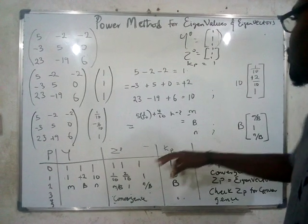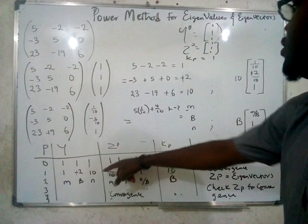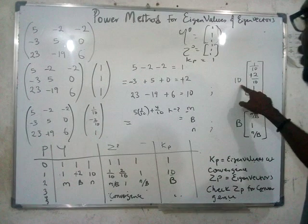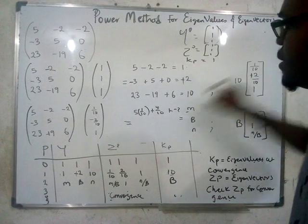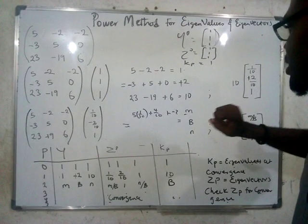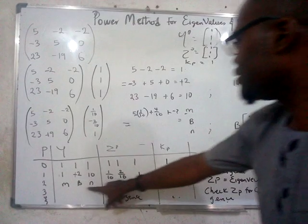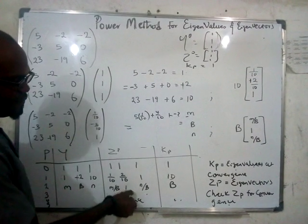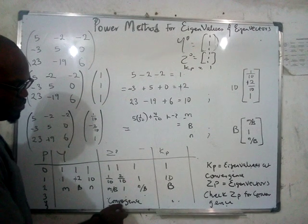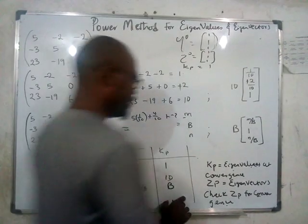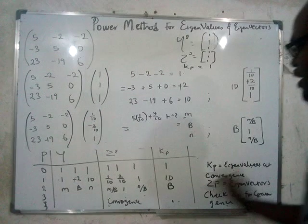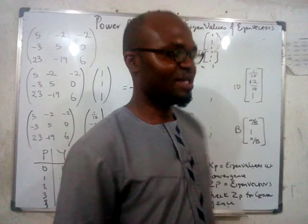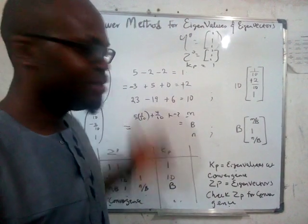For the second iteration onward, for your y values you put anything you get from the multiplication. For zp, anything you get inside; for kp, the biggest value that you factored out. Once you're done, use those values and solve again. Anything you get put as your y, anything normalized put as your zp, anything factored out put as your kp. Continue until two consecutive zp values become the same — then you have convergence. At that point, pick the kp value as the eigenvalue and the three zp values as the eigenvector. That's how you use the power method to solve for eigenvalues and eigenvectors.